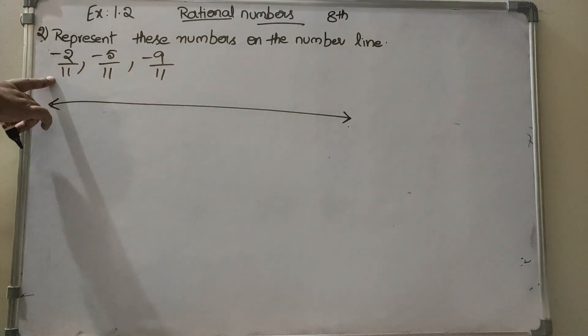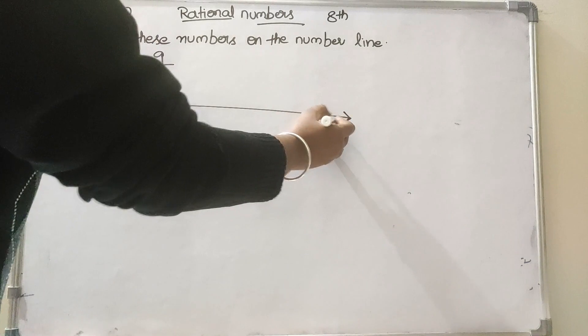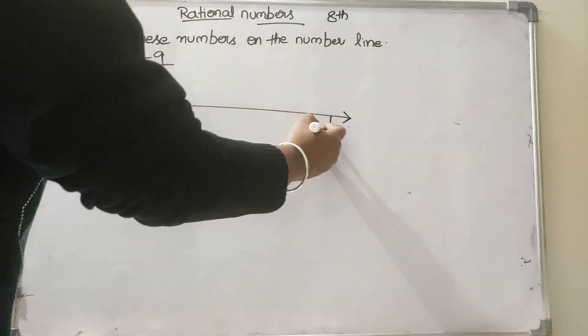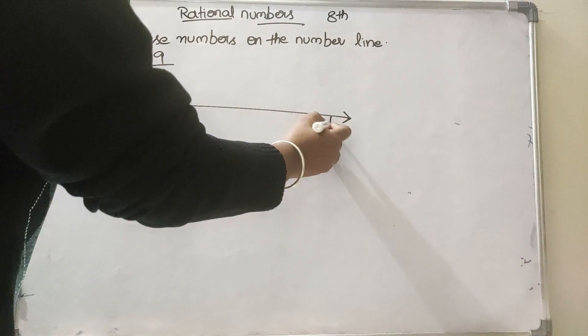As it is in the minus completely, we will start from the right to left: minus 0 by 11,